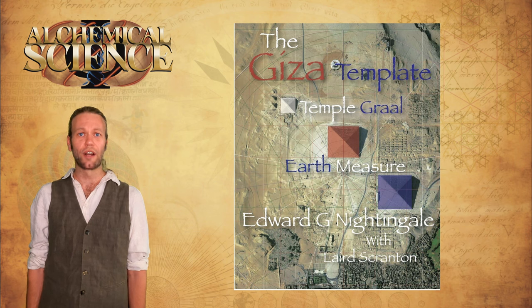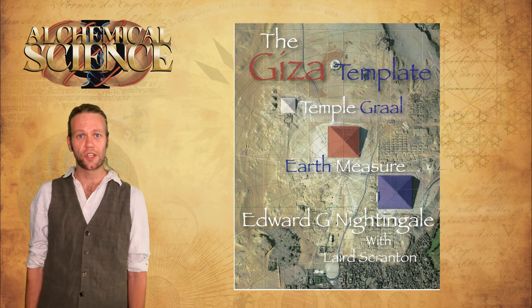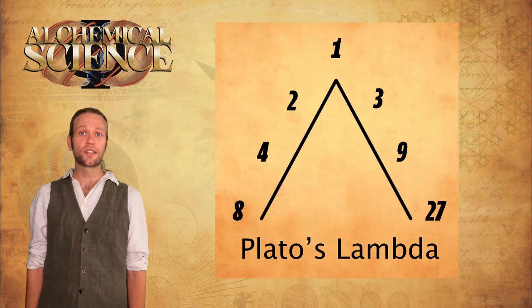Ed provides us with what I believe is conclusive evidence that both the Greeks and the builders of the pyramids knew of this science and these numbers. He's able to precisely mathematically reconstruct the Giza Plateau using only a compass, a carpenter square, and the lambda sequence, or the secret of doubling and tripling.